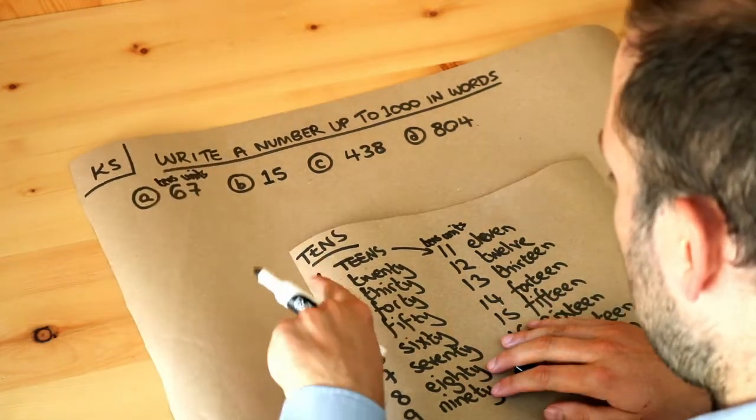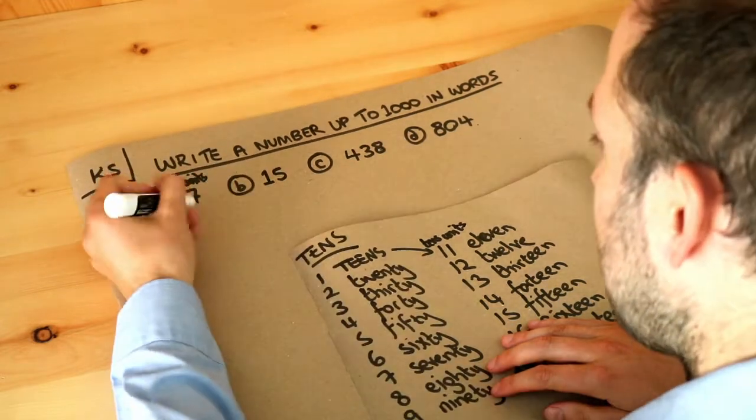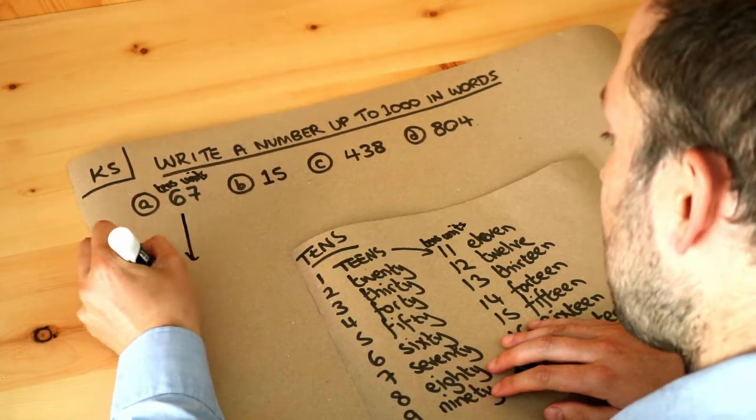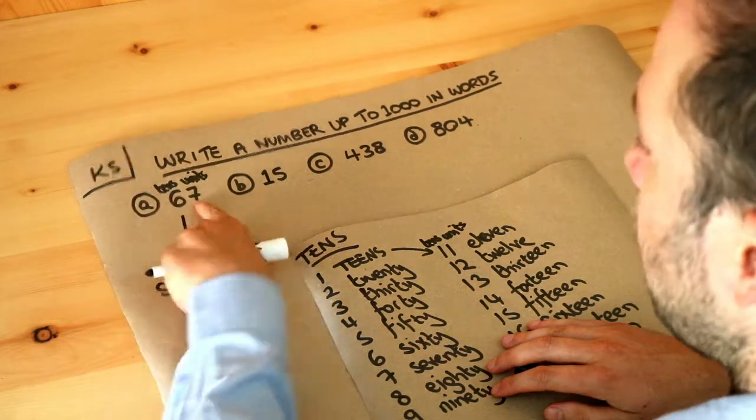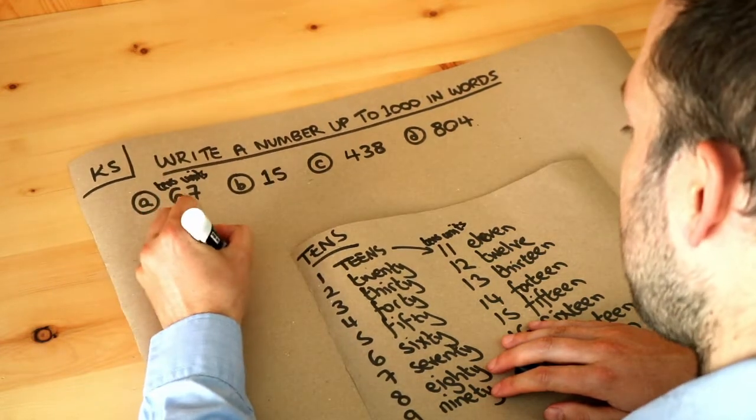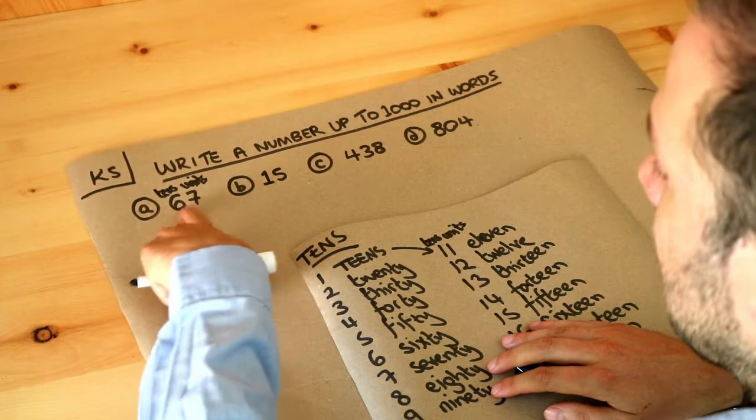So if the tens digit is six, it's sixty, so we say this as sixty. And then look at the units digit after that, it's a seven, so we just write seven. So there we go, this number is sixty-seven.